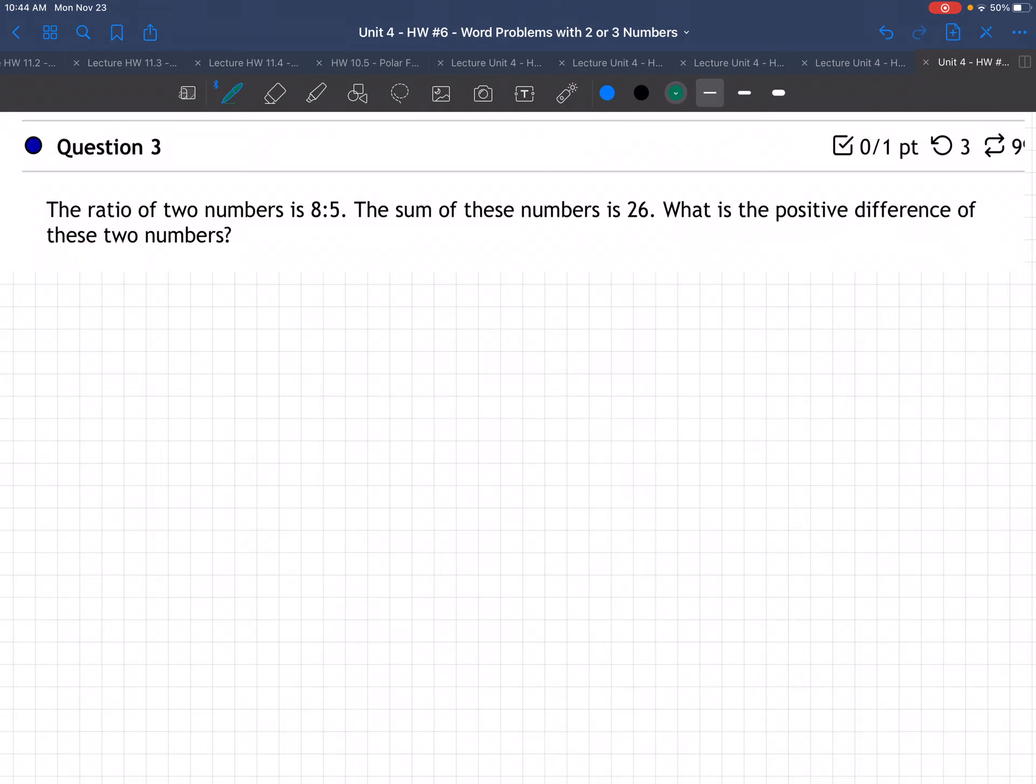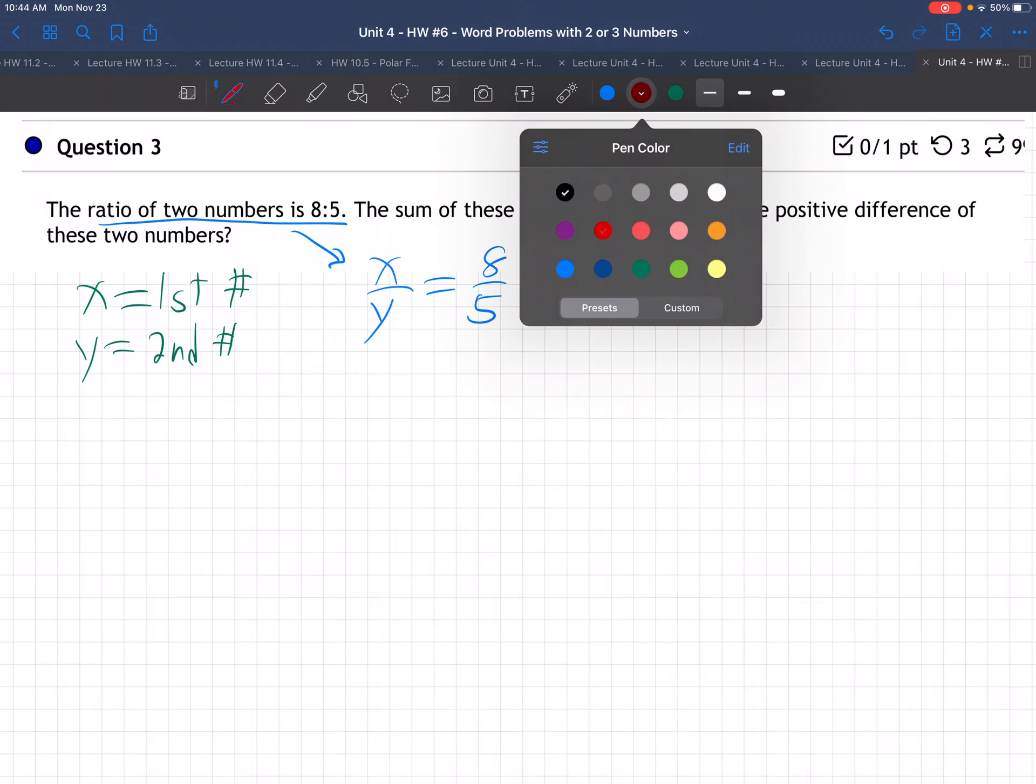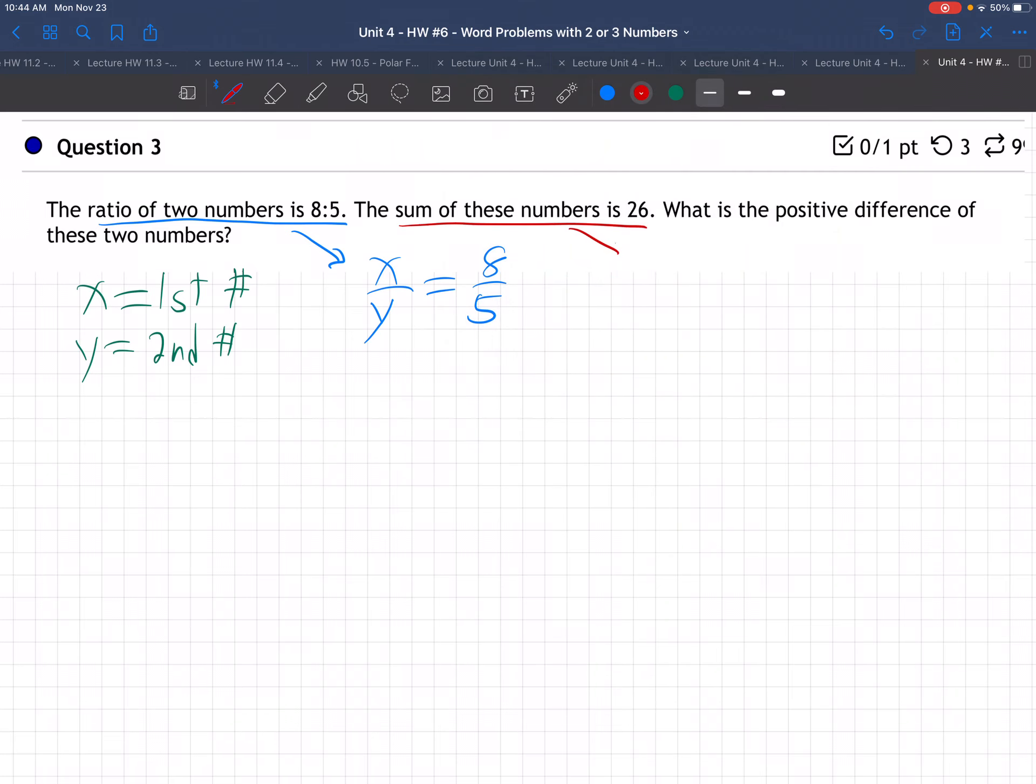So the ratio of two numbers is 8 to 5. I'm going to call x our first number and y our second number. The ratio is 8 to 5, so that means x over y is 8 over 5. The second key fact is the sum of these numbers is 26, so that means x plus y is 26.